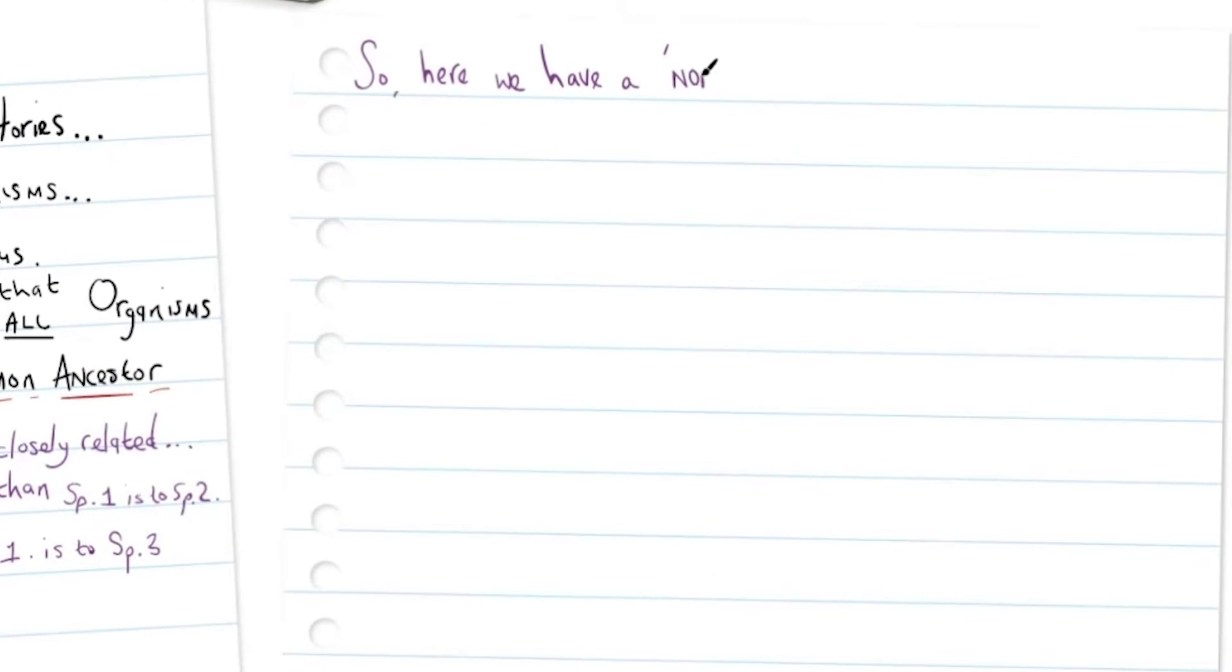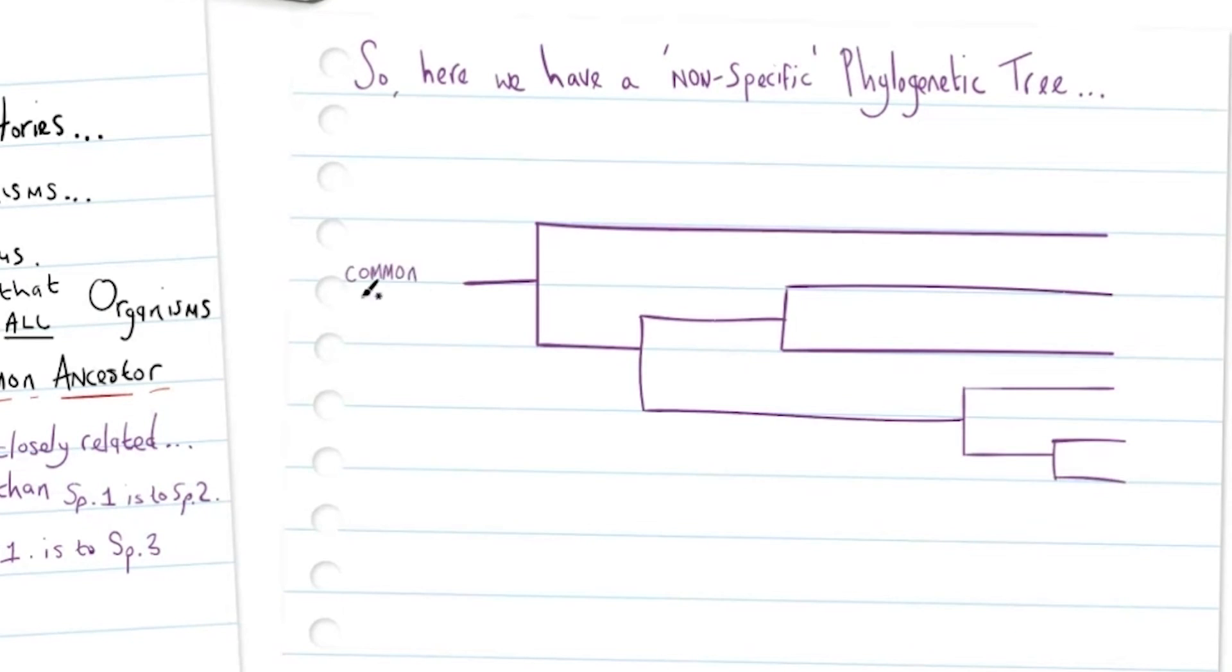So here we have another non-specific phylogenetic tree. On this tree we can see indicated a common ancestor. Remember, these branch points show shared common ancestors between each of the species that are represented at the ends of each of these branches, and the time is in millions of years.